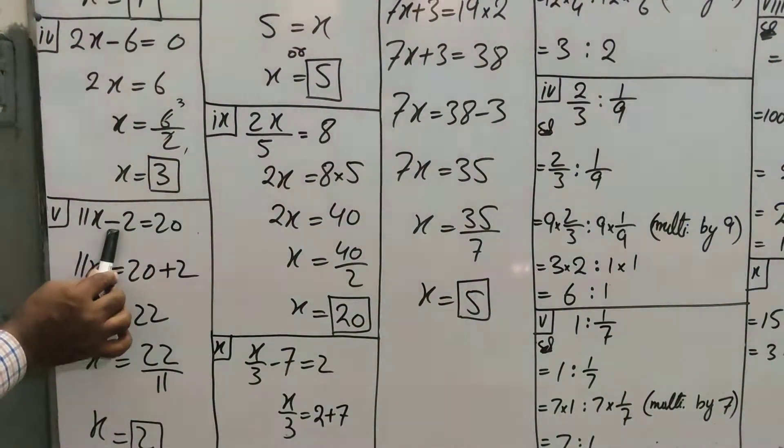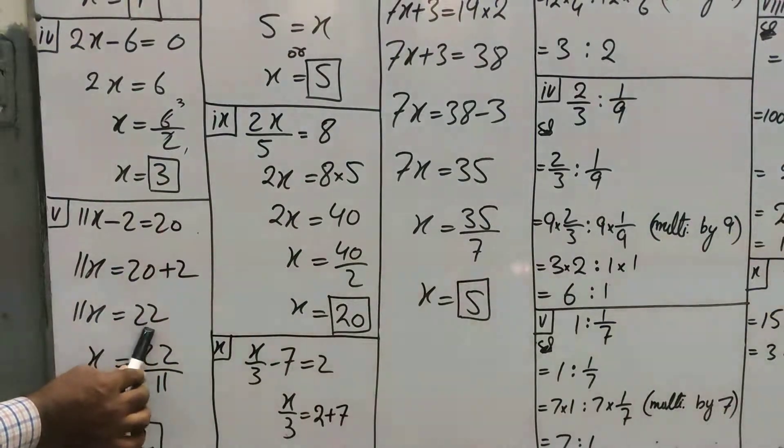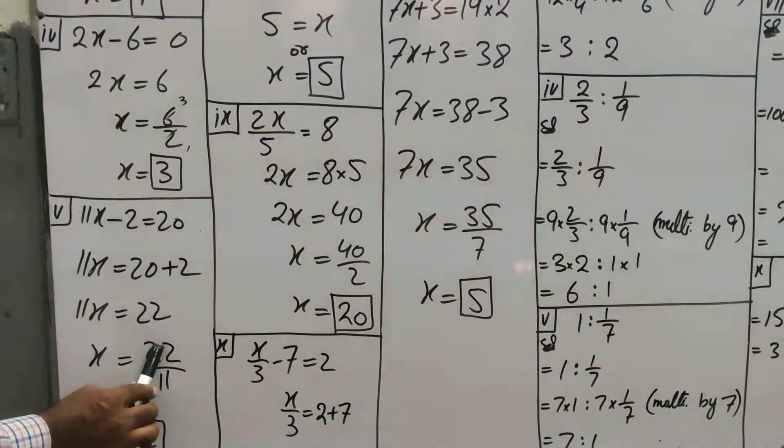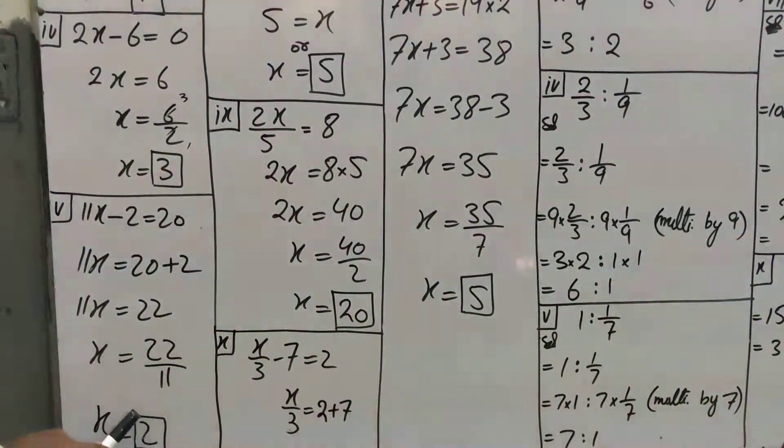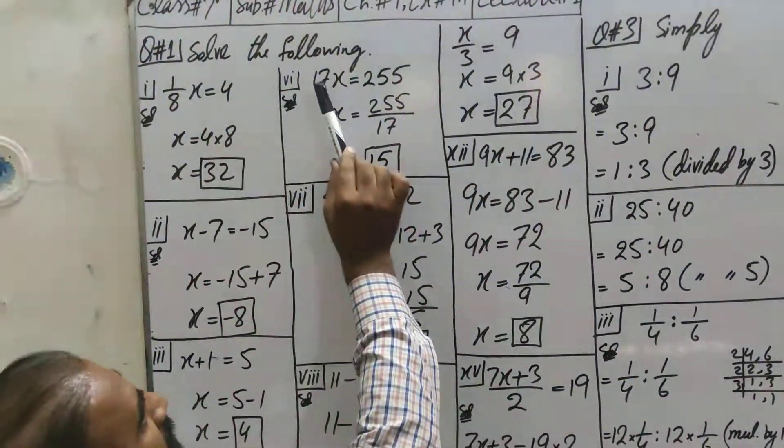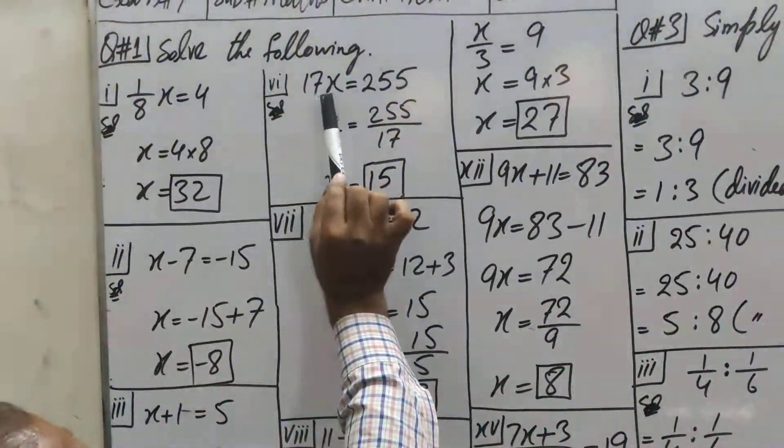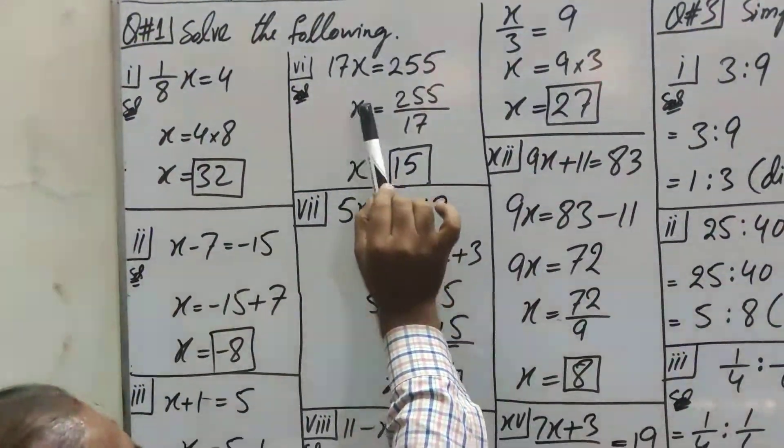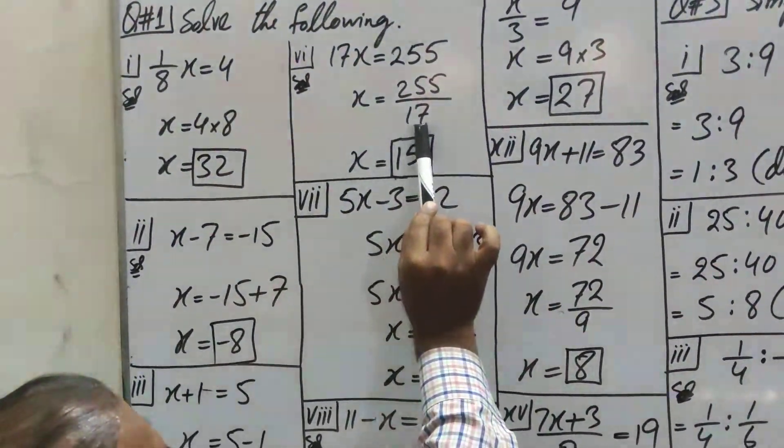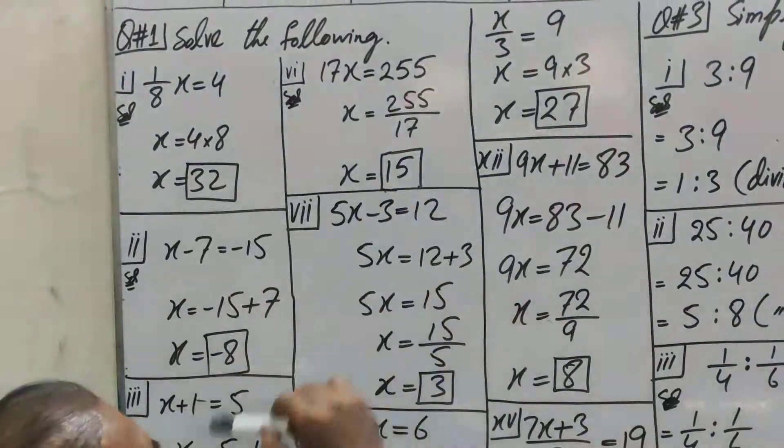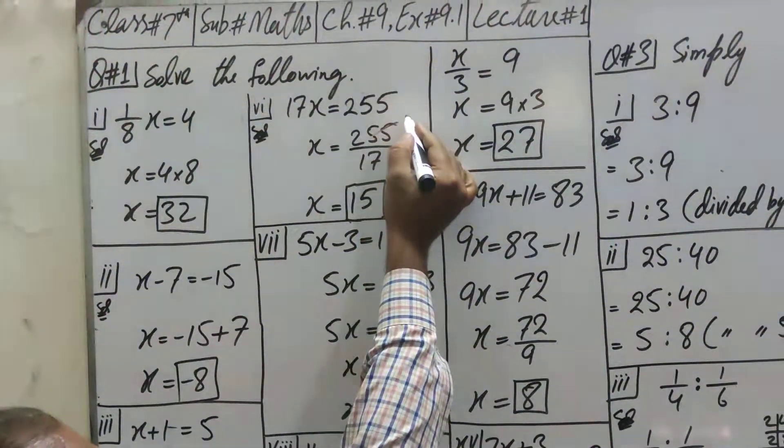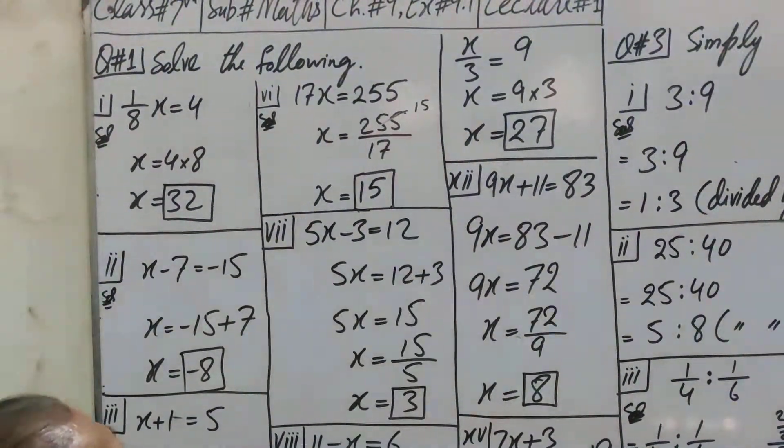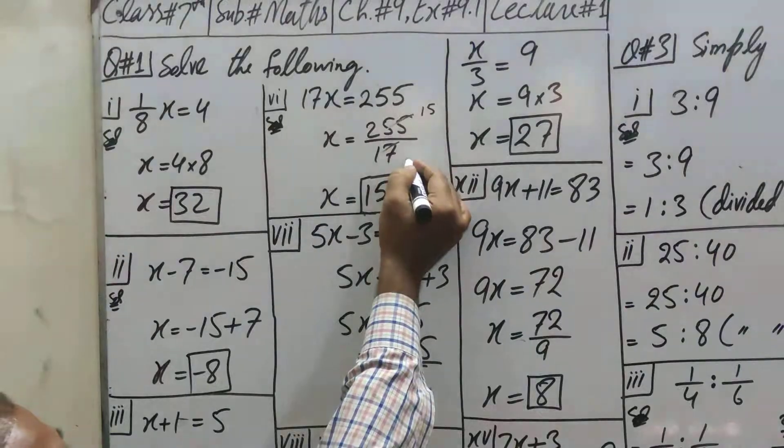This question, this is minus 2, first it will be plus 2, add 22, 11 multiply it, divide it. 11 × 2 = 22, answer will be. You can see that, yes, 6th part. 17x = 255. 17 multiply it, divide it. Now 17 you can cut it. 17 × 1 = 17, 17 × 8 = 17 × 5 = 85. So 15 answer will be.